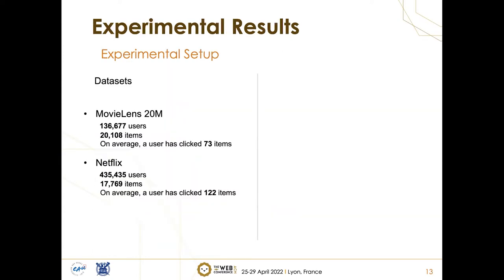Moving on to the experiment section: for the dataset, we used MovieLens 20M and Netflix data, which are the most popular datasets in this literature. In MovieLens 20M, we have 136,000 users and 20,000 items; on average, a user has clicked 73 items or watched 73 different movies. For Netflix, we have 435,000 users and 17,000 items, where on average a user has clicked 122 items or watched 122 movies.